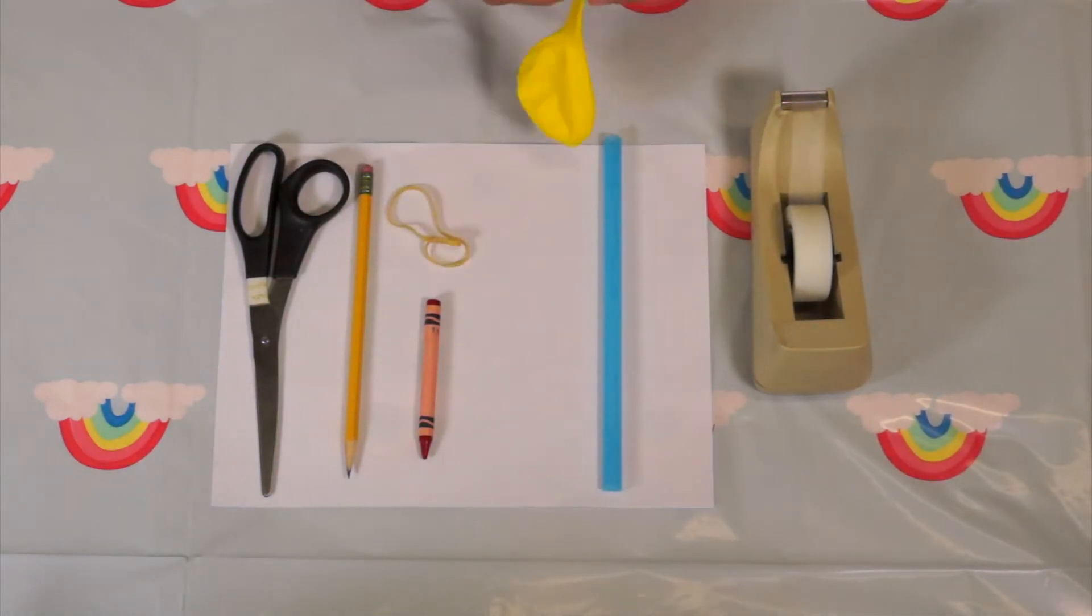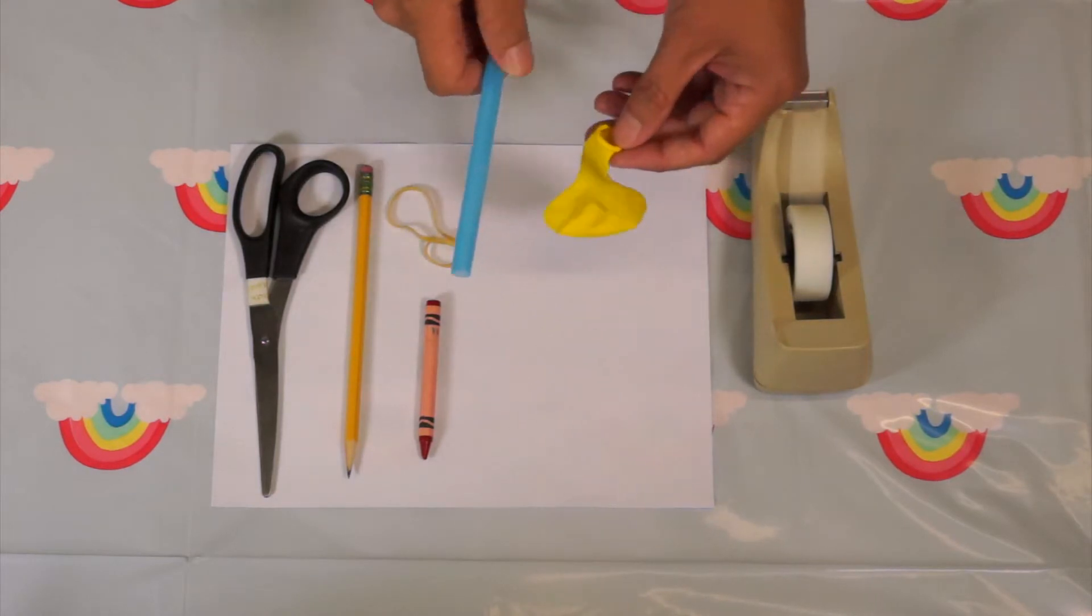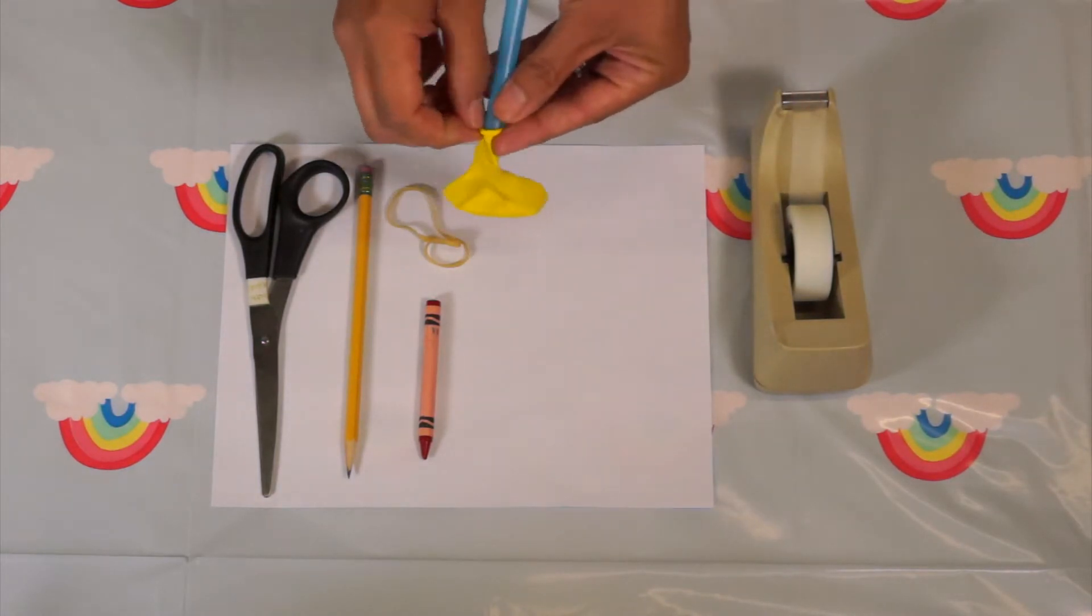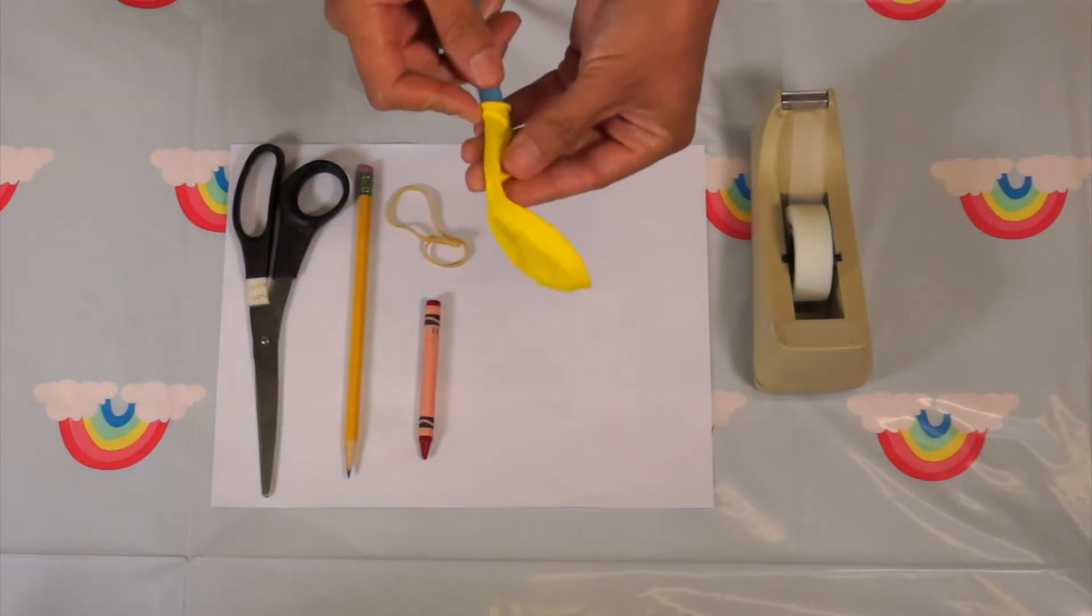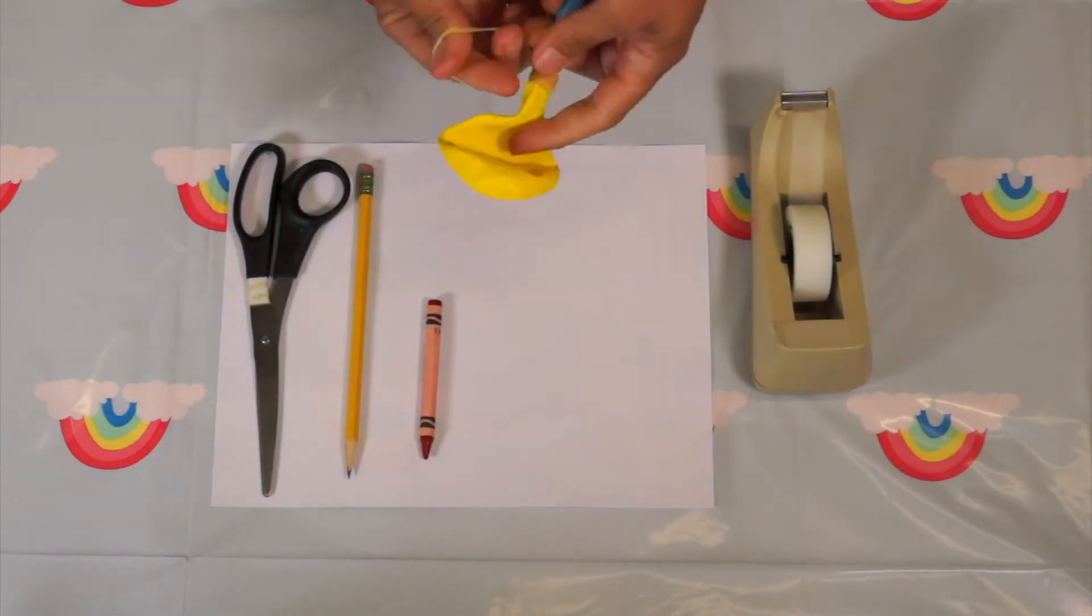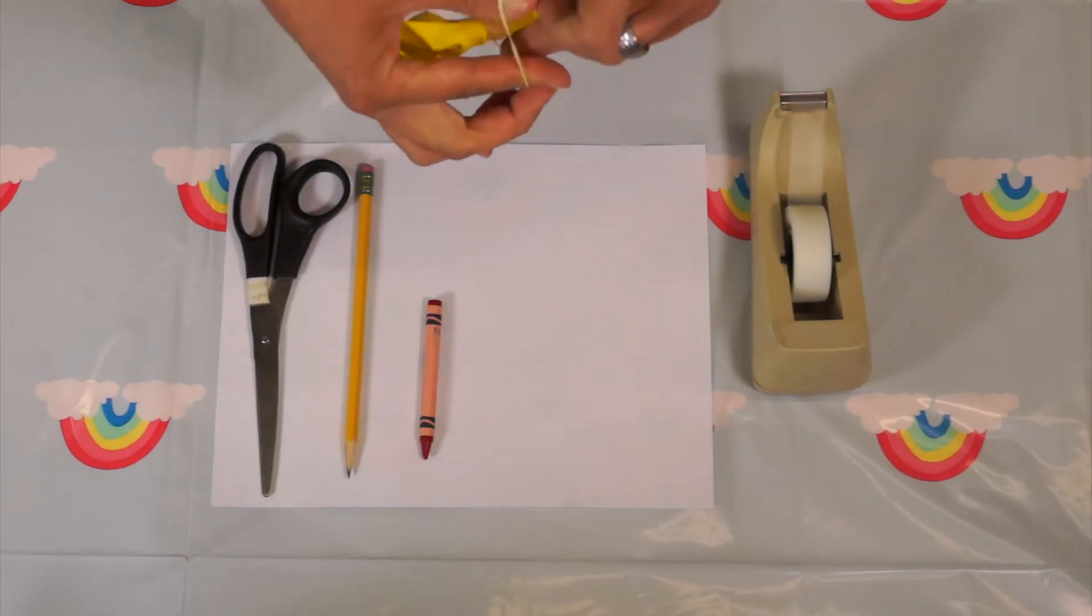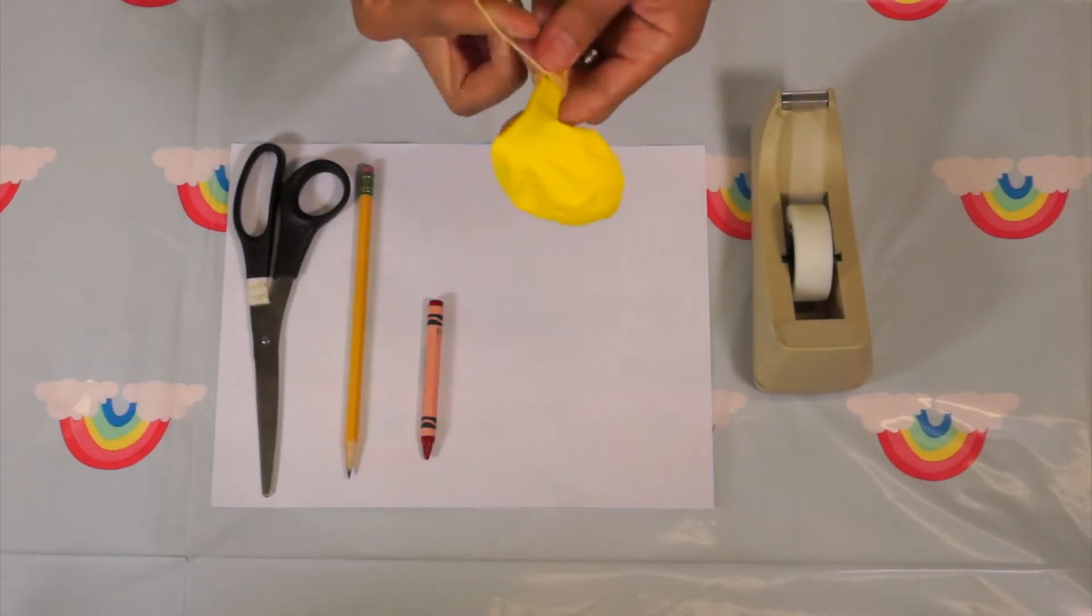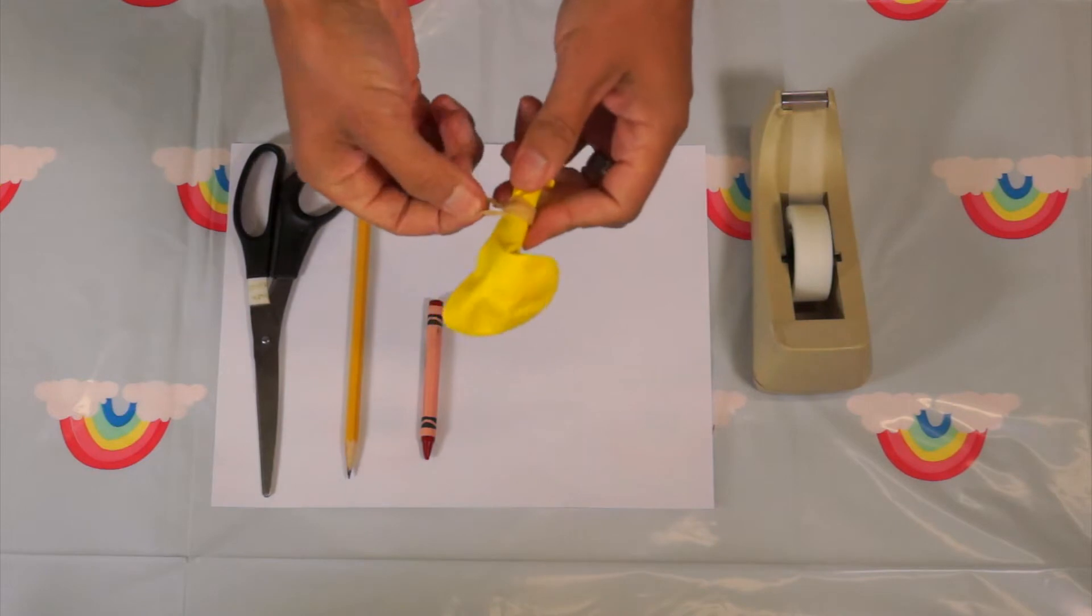First boys and girls, go ahead and grab your balloon. We're going to secure it to the straw. Grab the rubber band and start tying that around the straw there. You want to get it nice and tight.